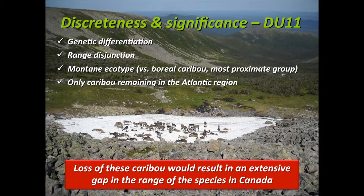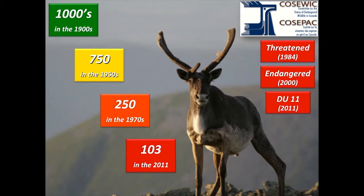All these reasons helped COSEWIC decide to attribute DU status to that small population. What do we know about the trend? Historic records suggest there were thousands of animals in the Gaspésie Peninsula at the beginning of the 20th century, dropping quickly to around 750 animals by the mid-1950s and to 250 animals by the late 1970s. This led COSEWIC to attribute a Threatened status by the mid-1980s and an Endangered status at the beginning of the 2000s. The last aerial survey by the Quebec government revealed the population is now around 100 animals.